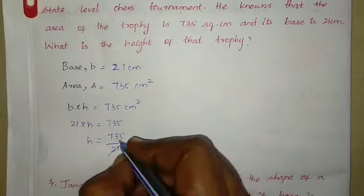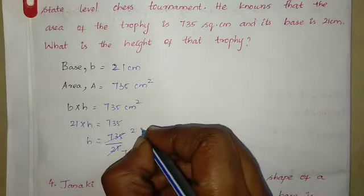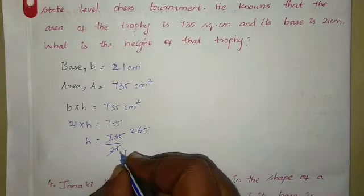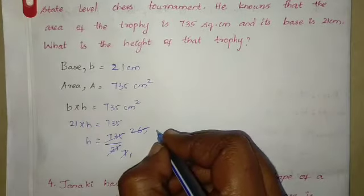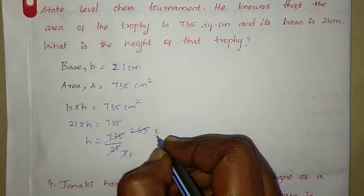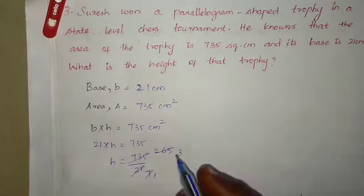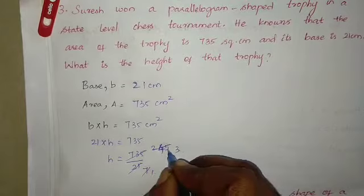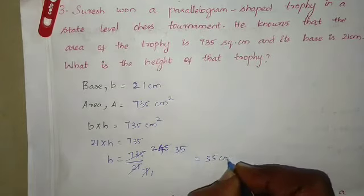Working out the division: 3 tables la 7 times, 2 times 12 vann 6 times, 15 vann 5 times — so 265. Thirumbha 7 tables la 1 times, 21 vann 3 times, balance 55. Sorry — 245 times. So 21 vann 3 times, 35 vann 5 times. So height vann 35 centimetre.